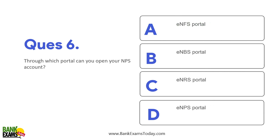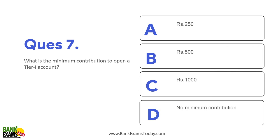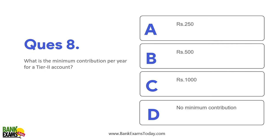You can open an NPS account through the eNPS portal. The minimum contribution to open a Tier 1 NPS account is 500 rupees, but there is no minimum contribution per year for a Tier 2 account. There are two types of accounts: Tier 1 and Tier 2. In this lecture, as well as yesterday, we were focusing on Tier 1 because you get the tax benefits in the Tier 1 account only.